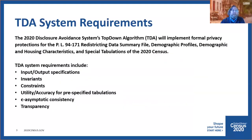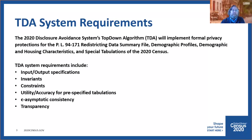The 2020 Disclosure Avoidance System's top-down algorithm, or TDA for short, will be the method used to implement differentially private noise infusion for the first set of 2020 Census data products, which include the Public Law 94-171 redistricting data, the demographic profiles, and the demographic and housing characteristics files. The TDA will also be used for any special tabulations of the 2020 Census.